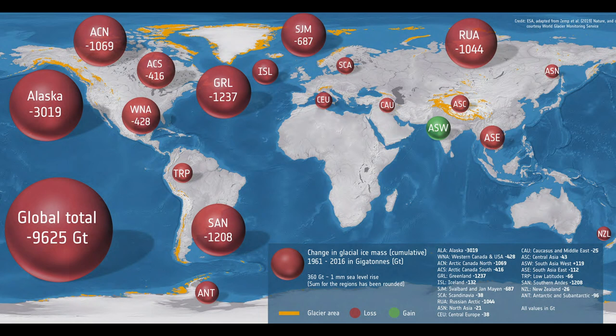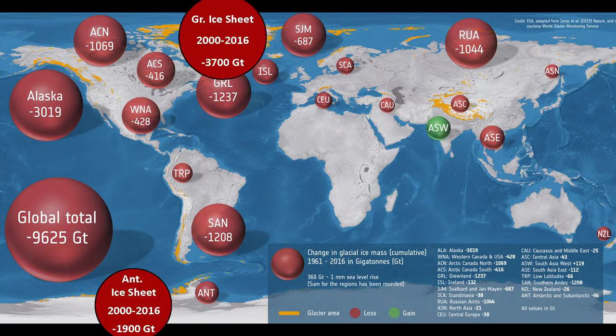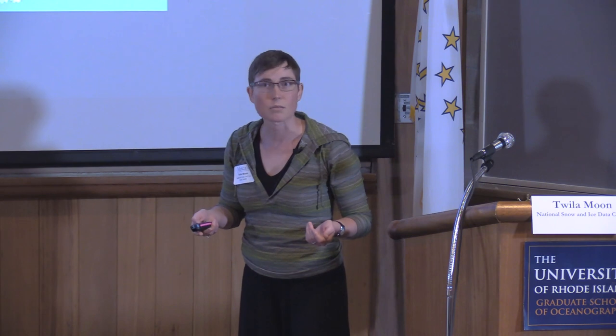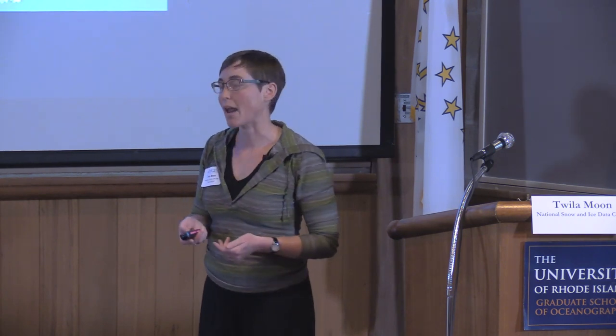You can get a sense that we have 3,000 gigatons of ice lost from the Alaska region, 1,000 gigatons from the Russian Arctic. If we add in the Greenland ice sheet — just looking at between 2000 and 2016, cutting out the earlier 40 years because there wasn't a lot of ice lost during that period — we're up close to 4,000 gigatons in Greenland and close to 2,000 gigatons in Antarctica. So we have these big numbers spread all across the globe. Why should you believe what I'm telling you, and how in the world do we know this to be true?